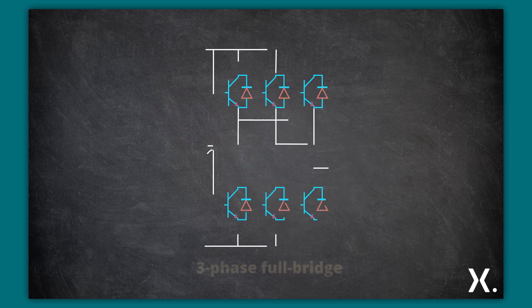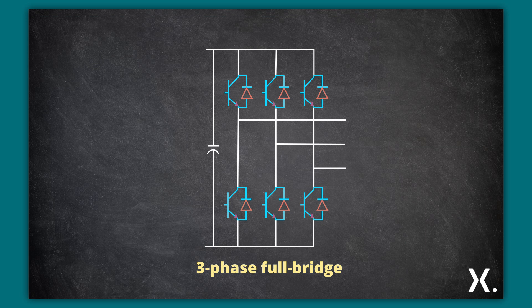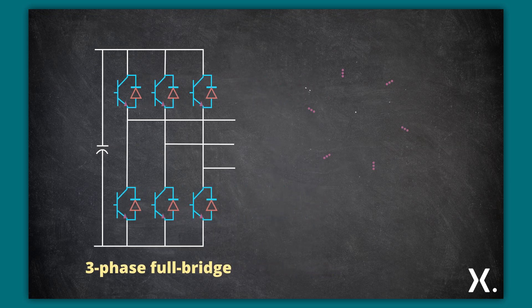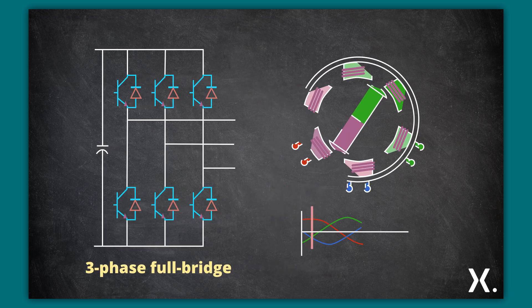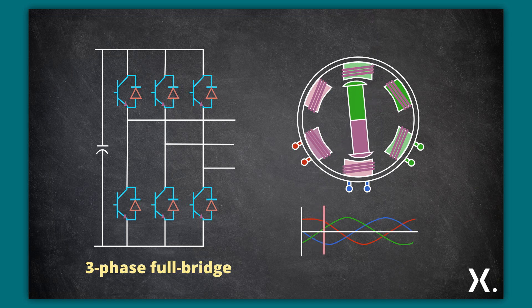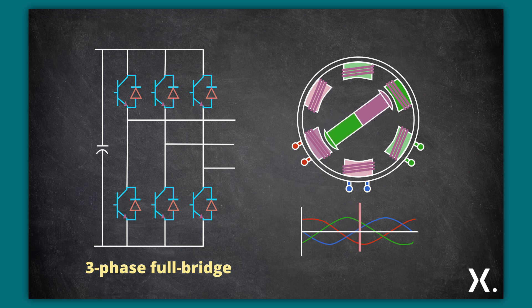Six IGBTs in a three-phase full bridge topology produce PWM sinusoidal currents in the motor stators. This in turn generates a Lorentz force on the current carrying conductor within a magnetic field. This results in smooth and precise control of the position, velocity, and acceleration.